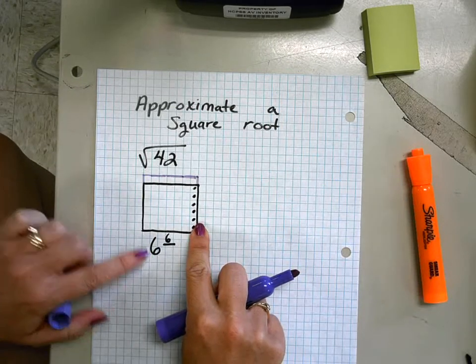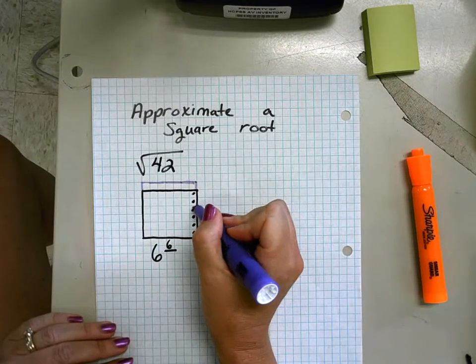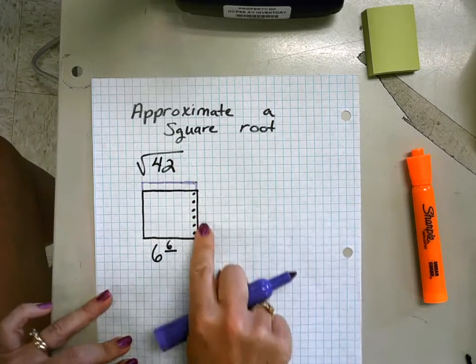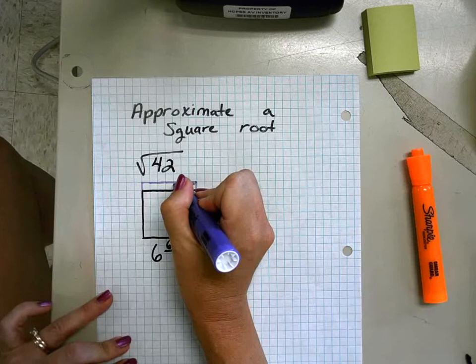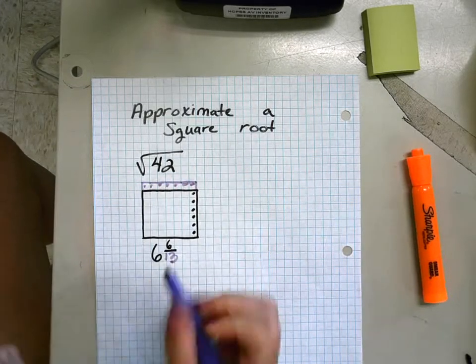Our denominator is our total number of blocks that we didn't need to get our six. So everything above our 36—our numerator were those six that we had to take away. Our denominator are all of these that we're not using: six, seven, eight, nine, ten, eleven, twelve, thirteen. The square root of 42 is approximately six and six thirteenths.